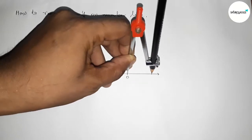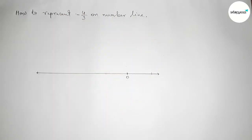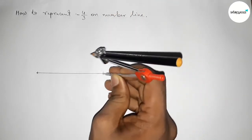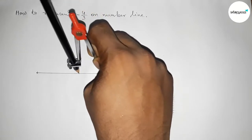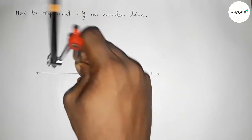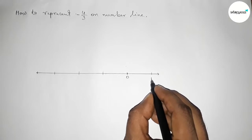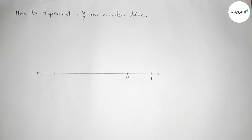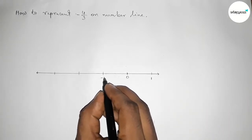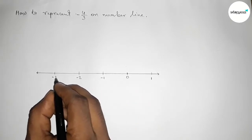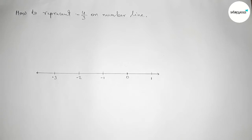Putting the compass on point zero and cutting here. With the same length, putting the compass on point zero and cutting here, then putting the compass here and cutting again. By this way we construct a number line. This side will be one, the other side minus one, then minus two and minus three, and so on.